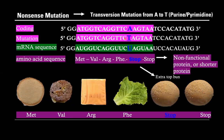In our nonsense mutation, you can see that initially we had a lysine amino acid here, but that now codes for a stop codon. This is going to produce either a non-functional protein or a shorter protein. As you can see, this would give us an extra top bun instead of our tomato in our cheeseburger.